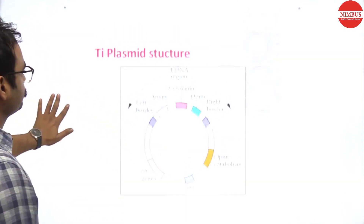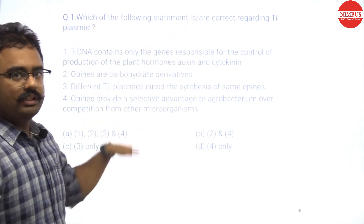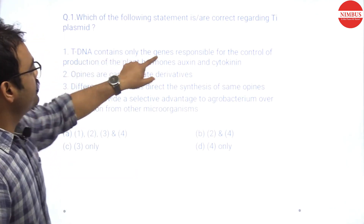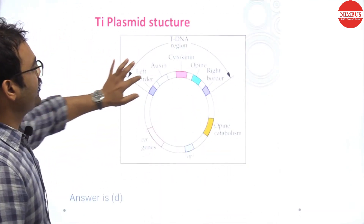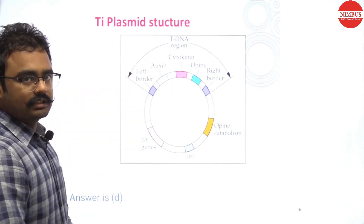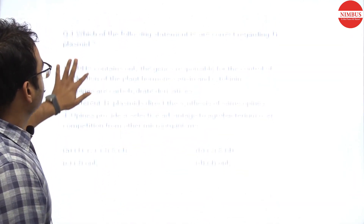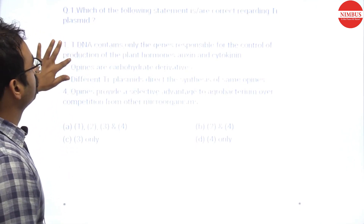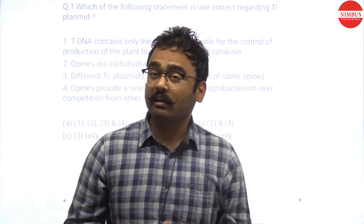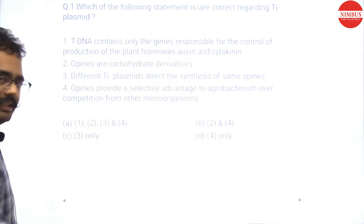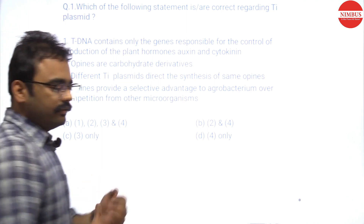Now, which statements are correct? First: T-DNA contains only genes for plant hormones auxin and cytokinin — wrong, because opine genes are also present. Second: opines are carbohydrate derivatives — wrong, they are amino acid derivatives. Third: different Ti plasmids directly synthesize the same opines — also wrong.